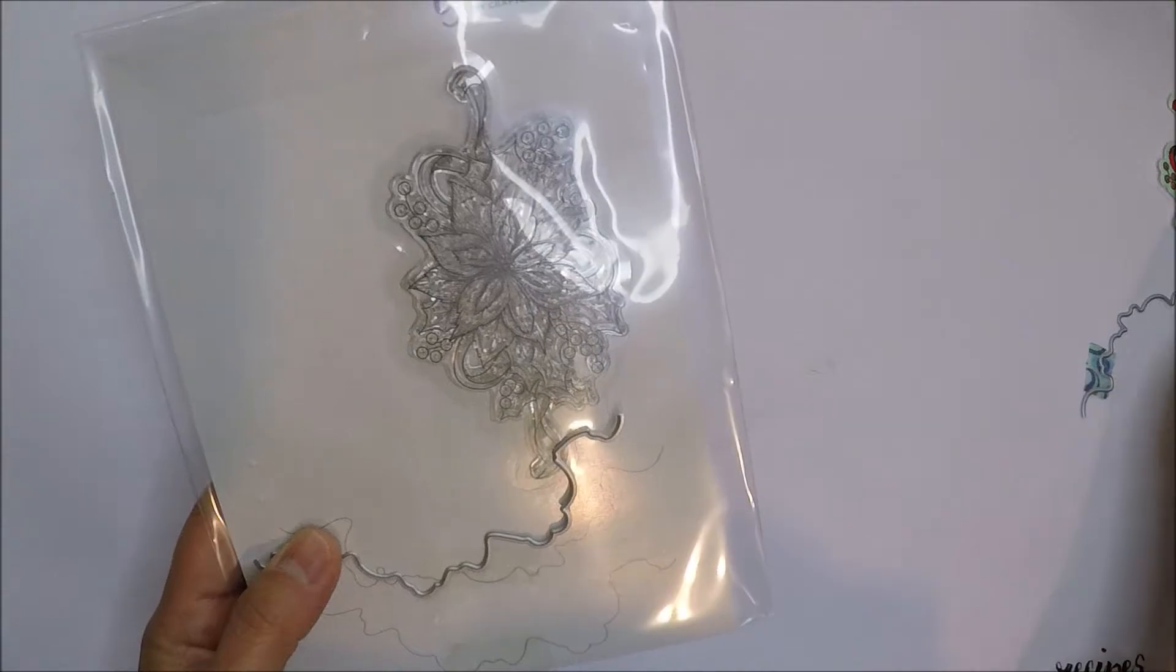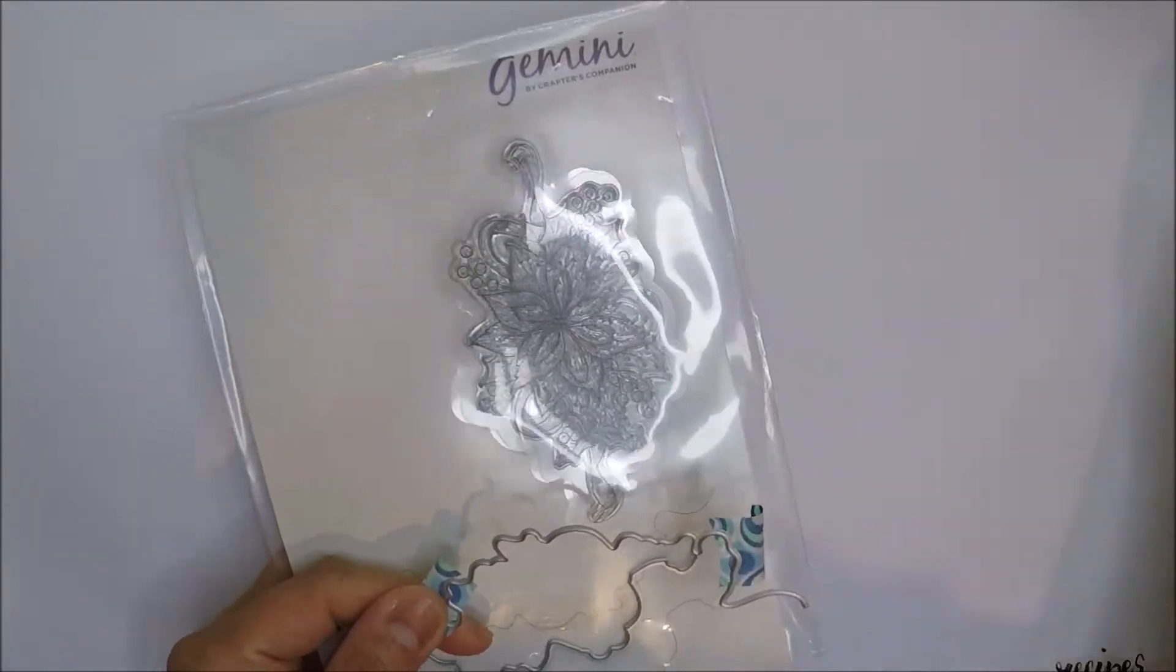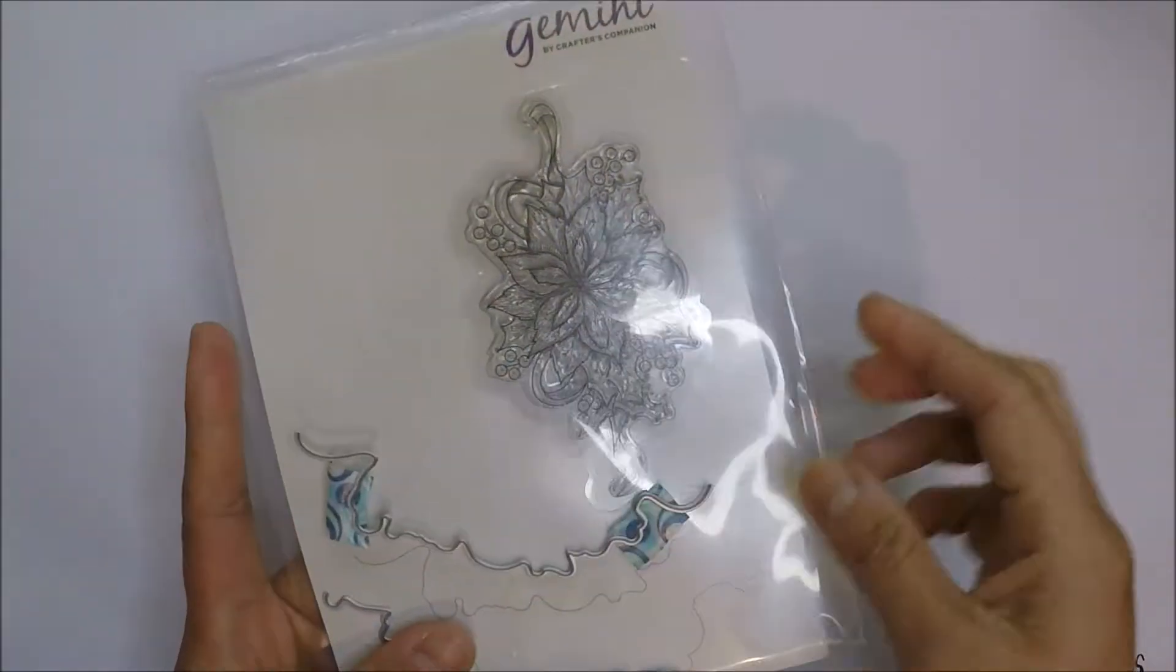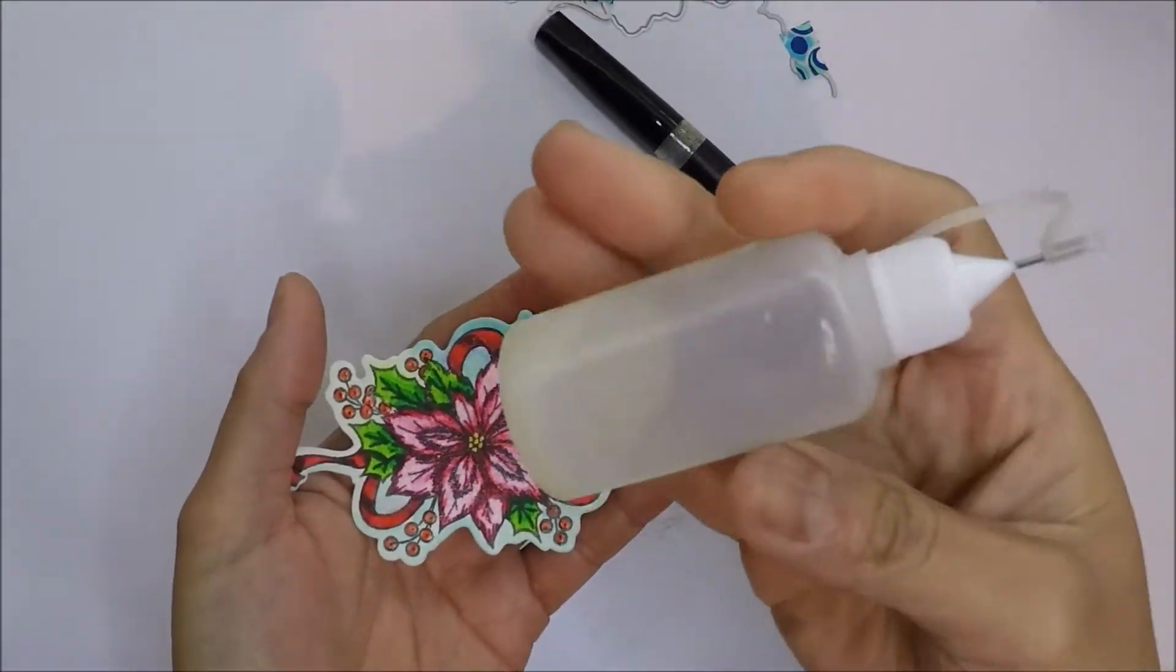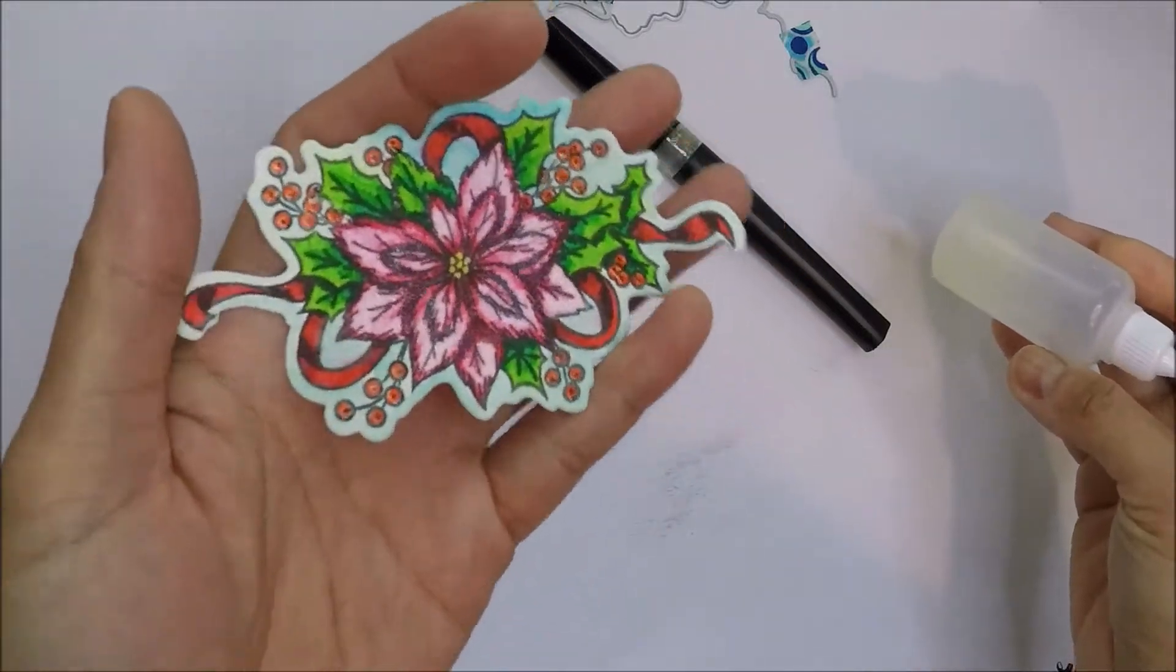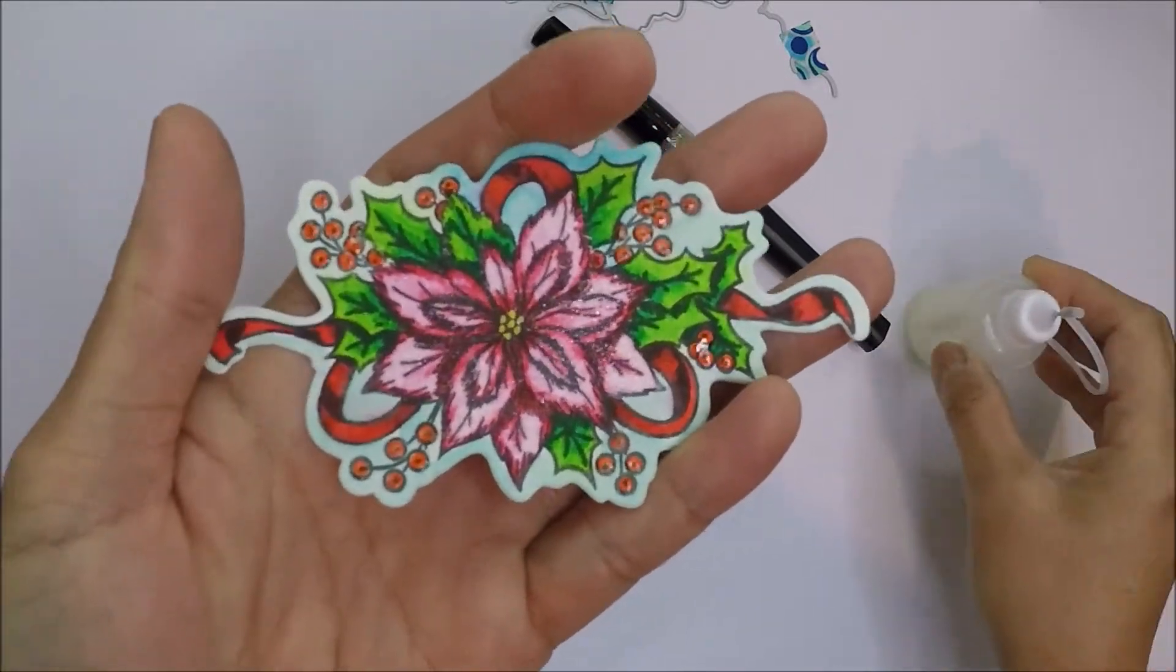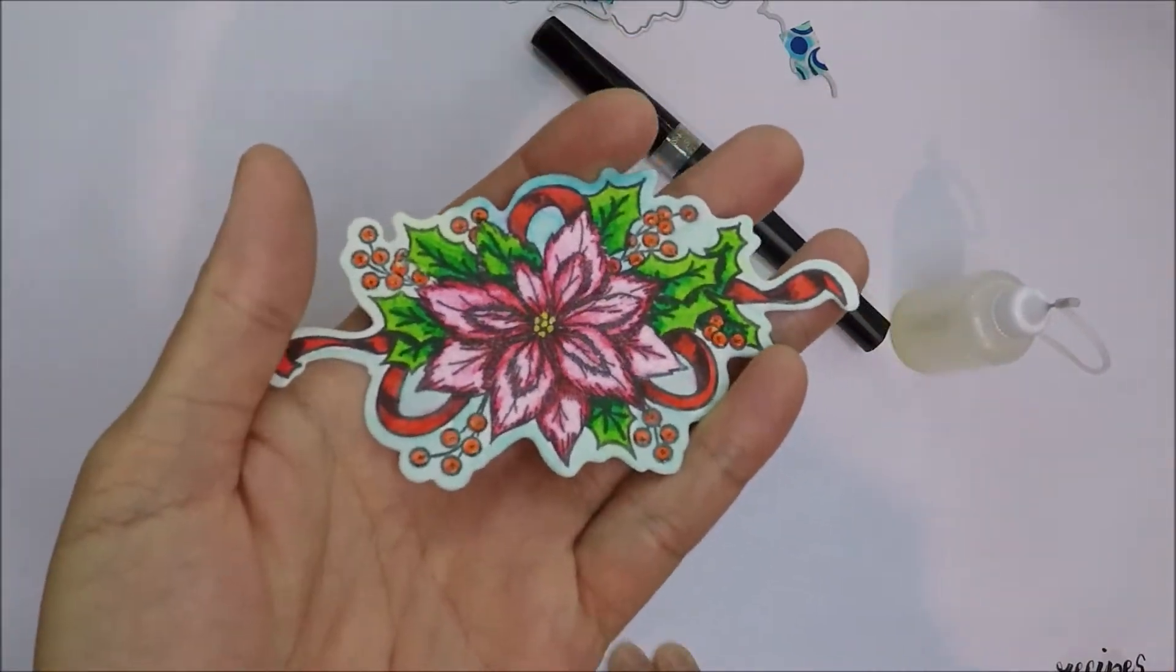For this card, I used Gemini Poinsettia Stamp and Die Set. I colored the beautiful Poinsettia stamp with my Zig markers and added some shimmer with Spectrum North Sparkle Pen. I also added glossy accents on the red berries.